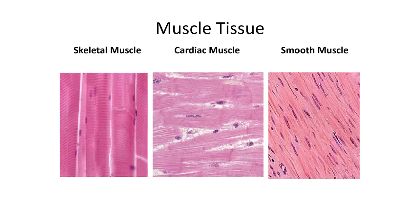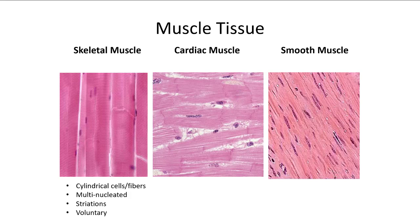Skeletal muscle has long cylindrical cells and fibers that are multi-nucleated — meaning more than one nucleus — because these cells are so long. For instance, your bicep from up near your shoulder all the way down toward your elbow is one cell expanding that whole distance. So a skeletal muscle cell is as long as the whole muscle itself and must have lots of nuclei across that distance so the cell can maintain repair and lifelong health. It has striations — tiny dark and light stripes side to side — and it's voluntary, requiring a conscious thought in your brain to tell it to move.